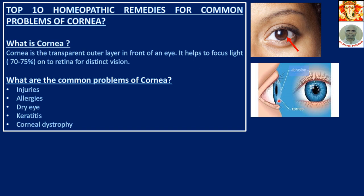Looking at the same thing in side view — this is the cornea. What are common problems of cornea? Injuries, allergies, dry eye, keratitis, and corneal dystrophy. These are the common problems of cornea.